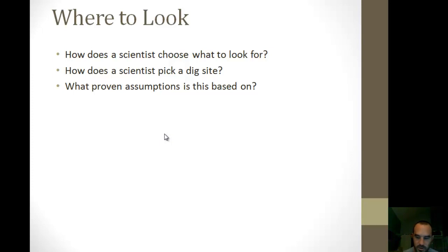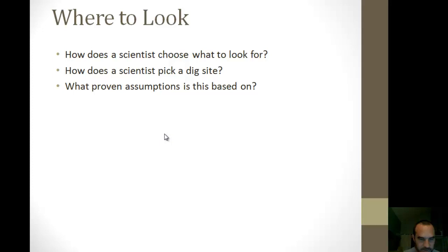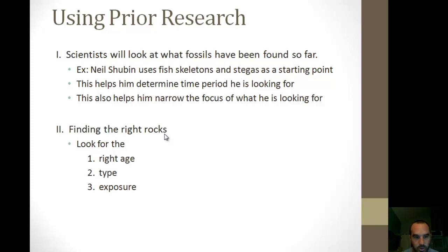Other people have found fossil evidence in rock layers of a certain age, so that lets him know the time period and where to look for what he wants to find. Using prior research, scientists look at fossils found so far. For Neil Shubin, he used fish skeletons of remnant fish that could live in both land and water, and fossilized Eusthenostega — the fish with front forelimbs and flat heads — as a starting point. This let him know when in time, how many million years ago, he would have to look for his fossil.